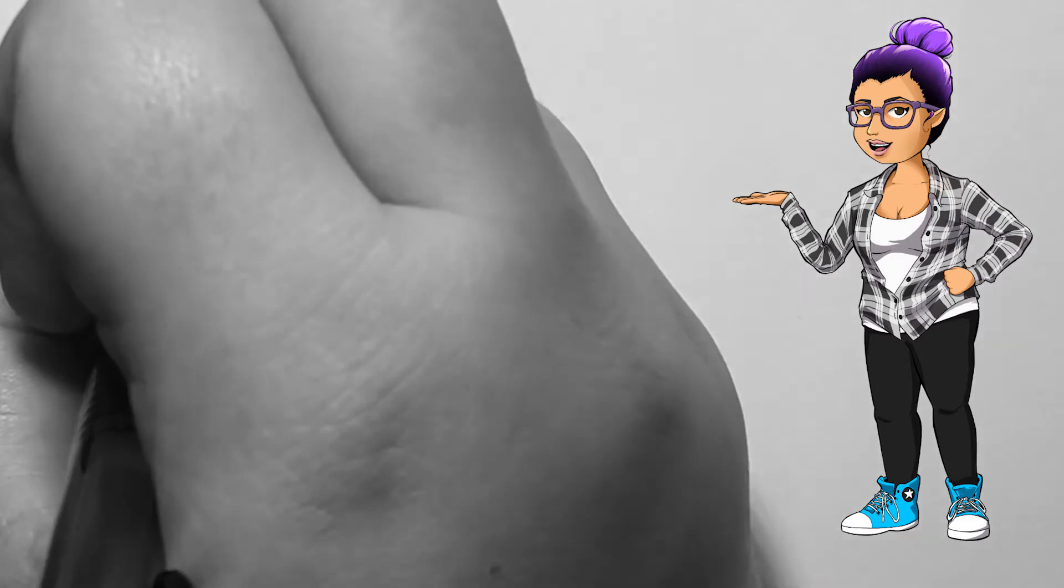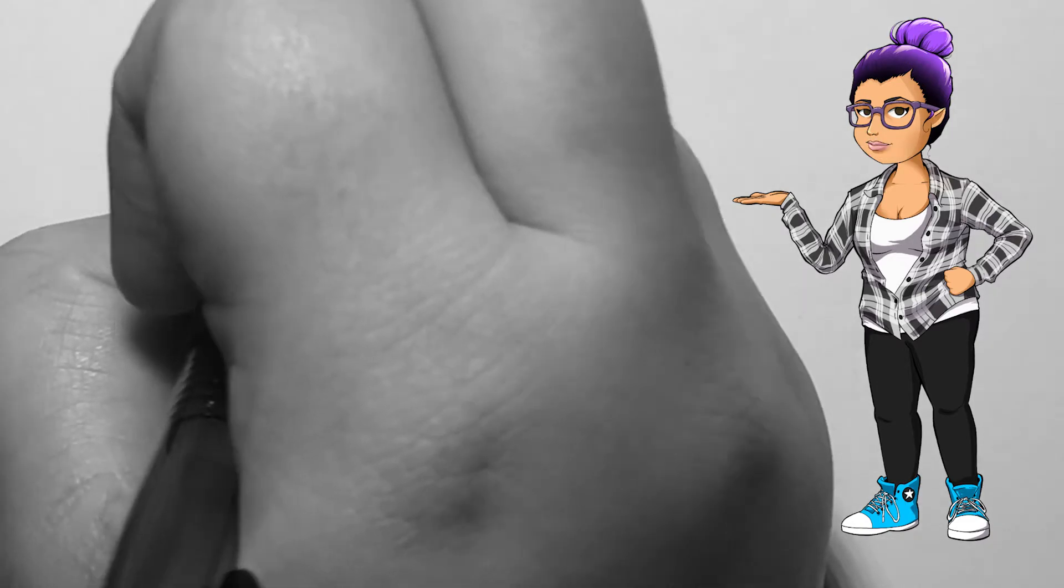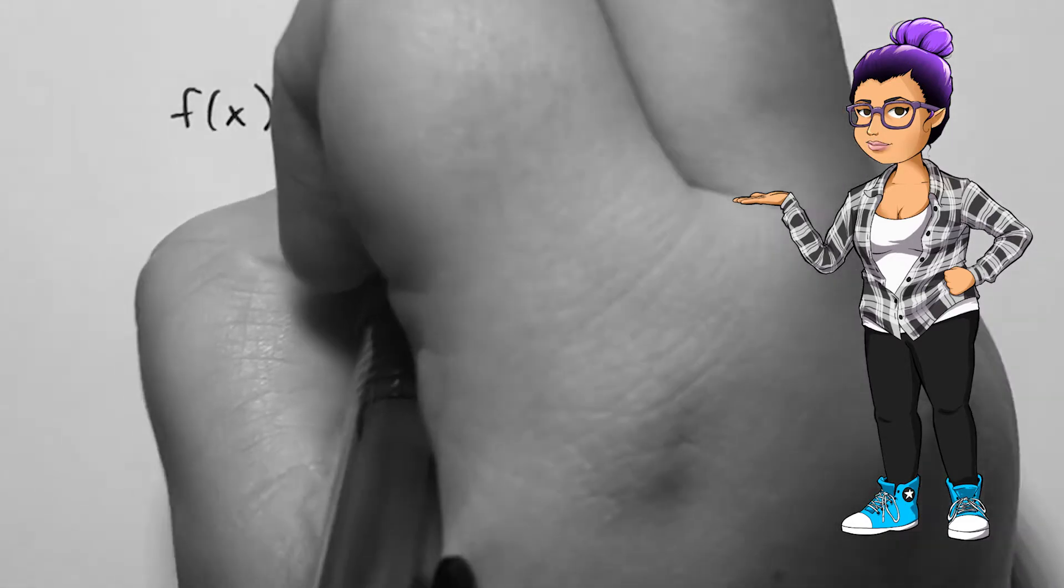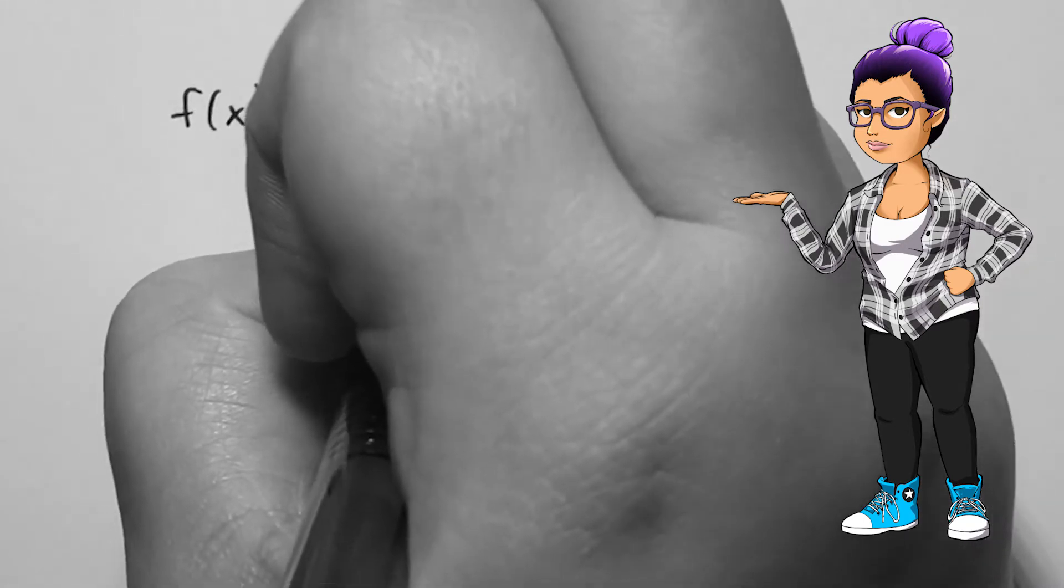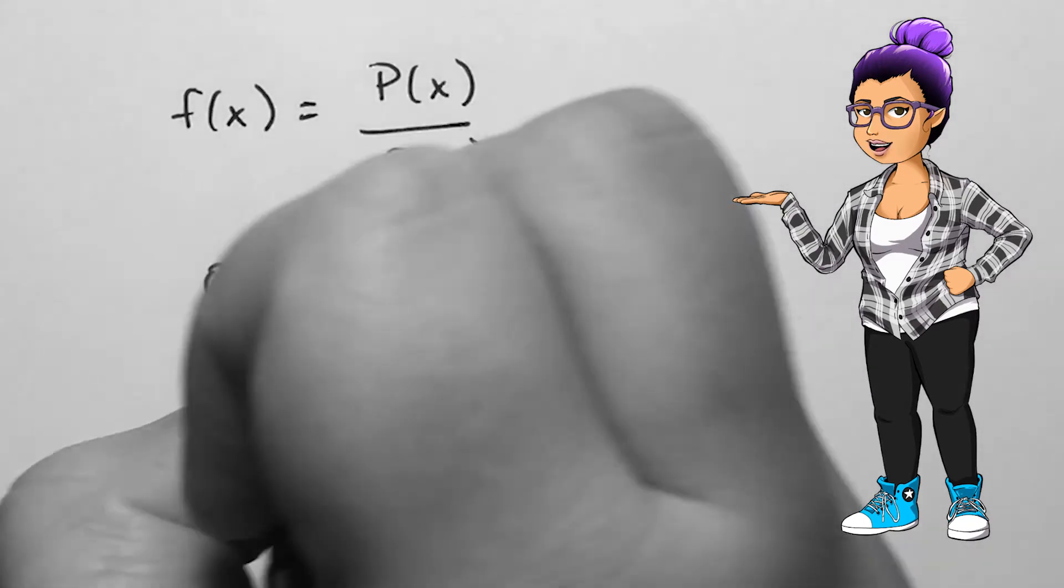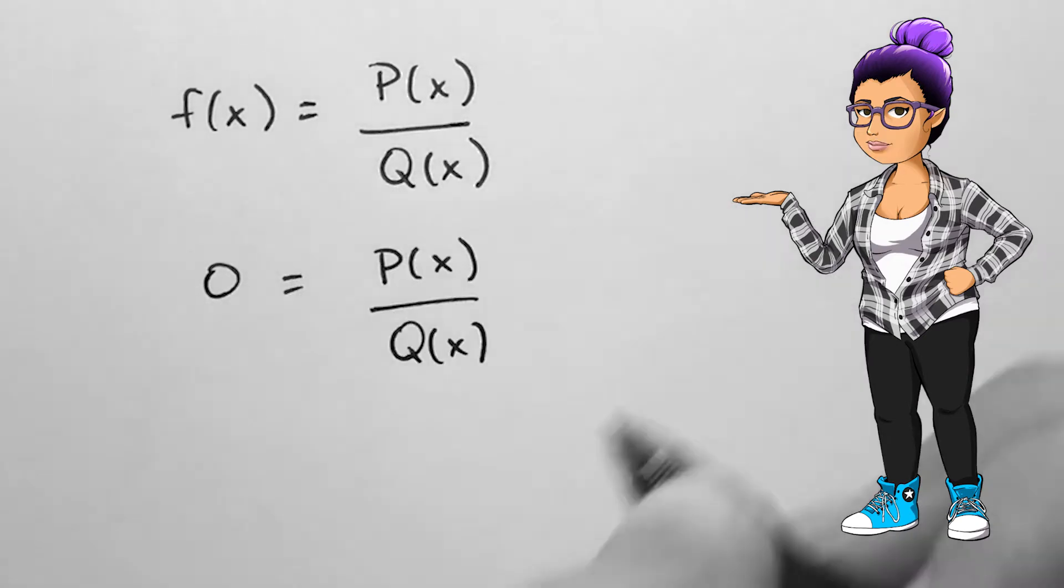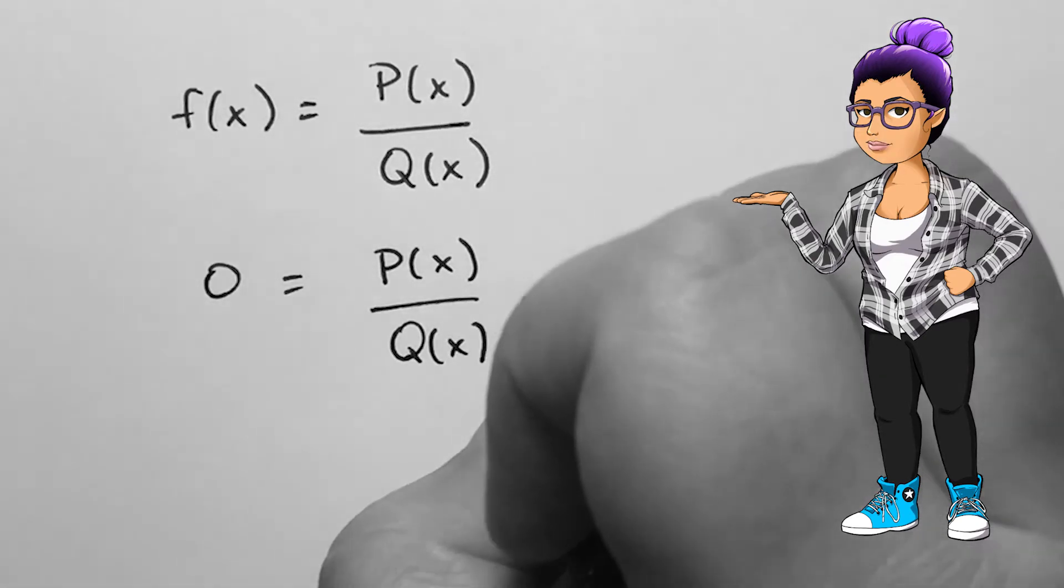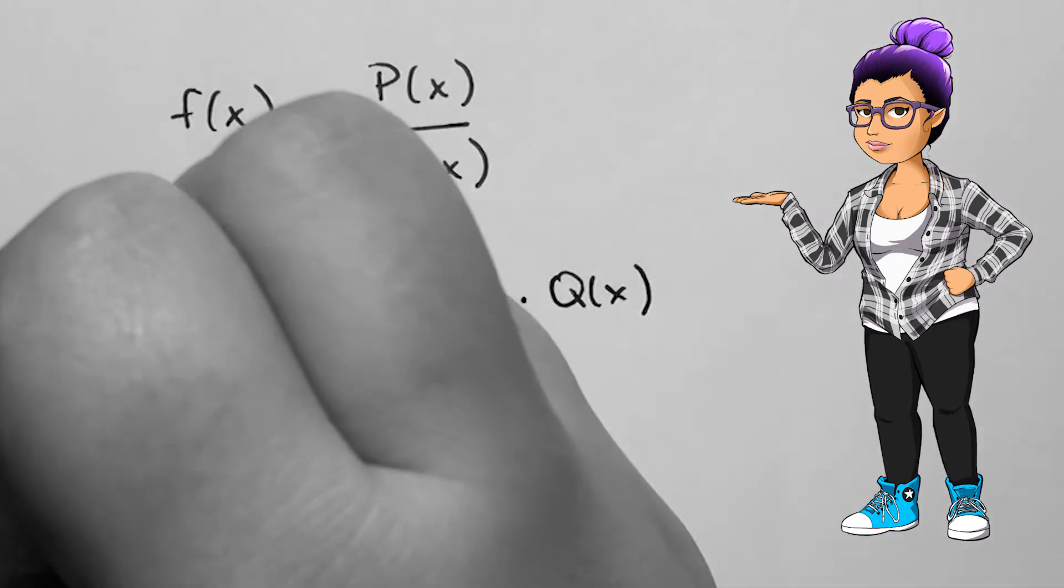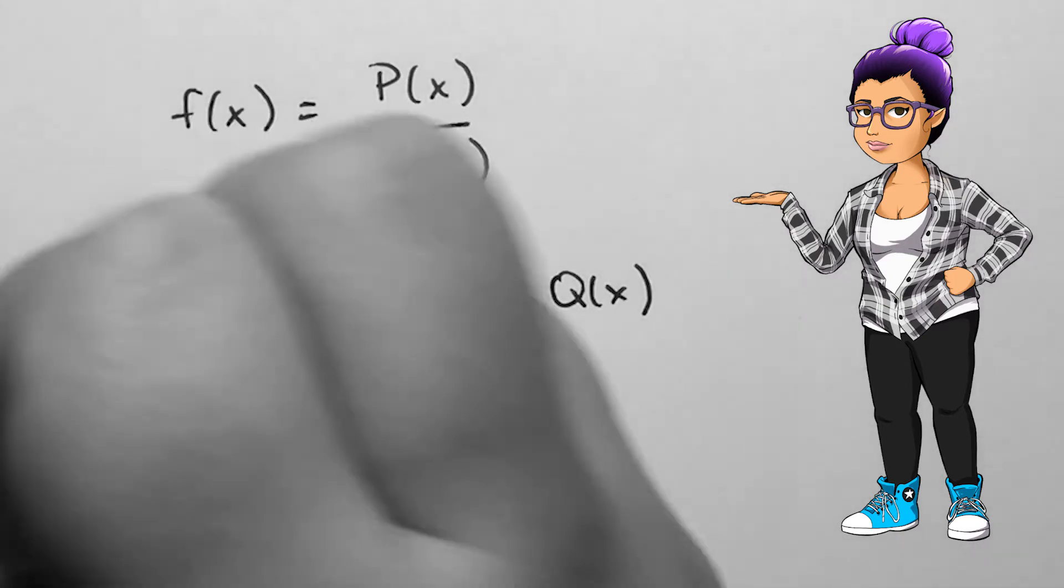To find the x-intercept of a rational function, the output must be 0. For simplicity, we'll use y and set the rational equation to 0. In trying to solve for x, we multiply both sides by the denominator and it disappears, so the x-intercepts of a rational function will be the x-intercepts of the polynomial of the numerator, as long as the x value is in the domain.